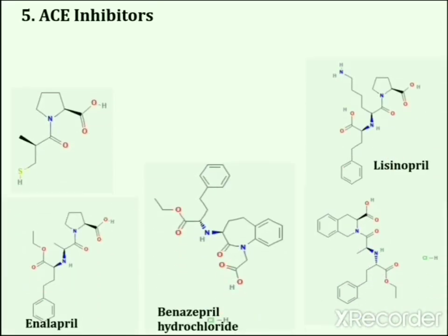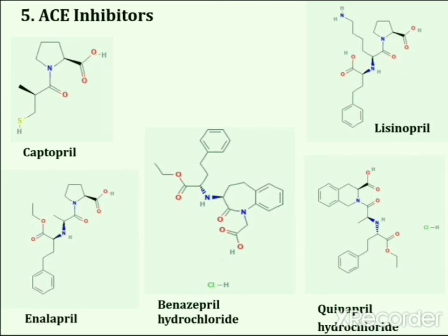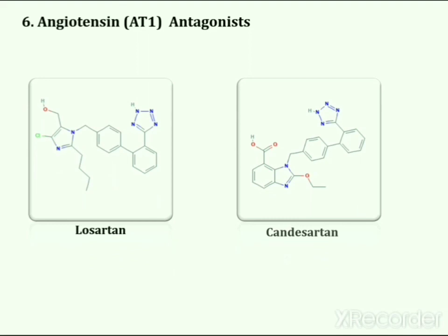The fifth main category is angiotensin converting enzyme inhibitors. Drugs in this category include captopril, enalapril, benazepril hydrochloride, lisinopril, and quinapril hydrochloride. The last main category is angiotensin antagonists, with losartan and candesartan as the main drug candidates of this category.